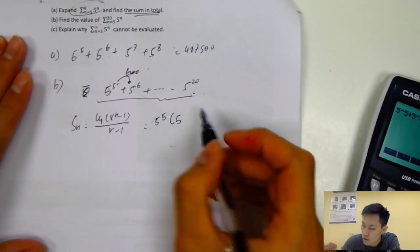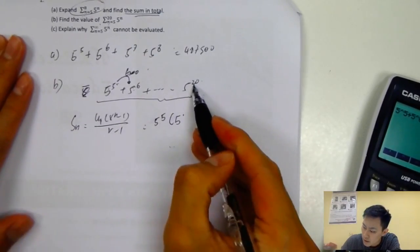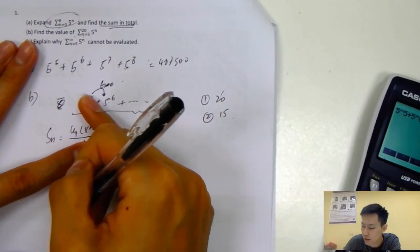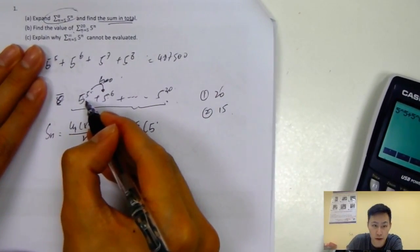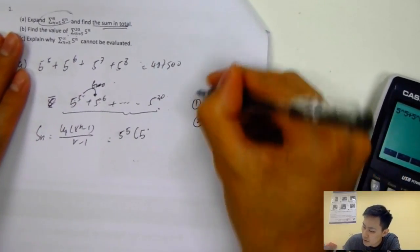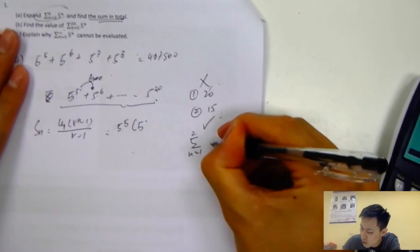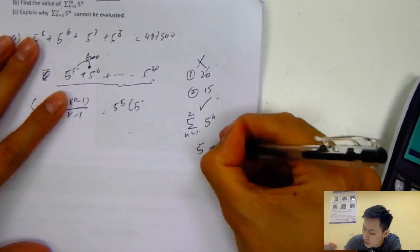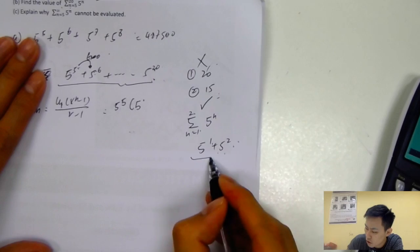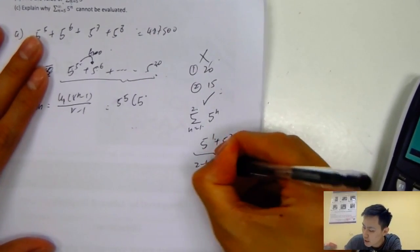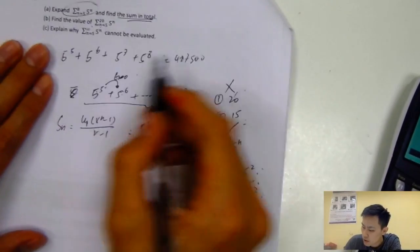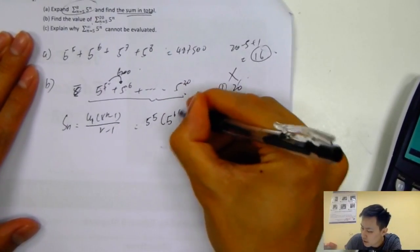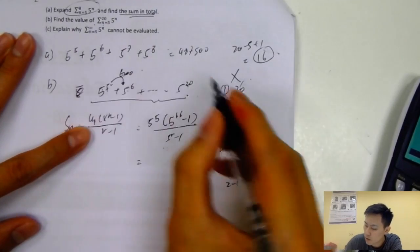Most students make a mistake right here with the number of terms. They write 20, or they write 15 (just 20 minus 5), thinking there are 15 terms. The correct method: if the sum runs from n=1 to 2, that's 2 minus 1 plus 1 = 2 terms. So for n=5 to 20, it's 20 minus 5 plus 1 = 16 terms. So the formula gives 5 power 5 times (5 power 16 minus 1) divided by (5 minus 1), which is 4. The key trick is the number of terms.